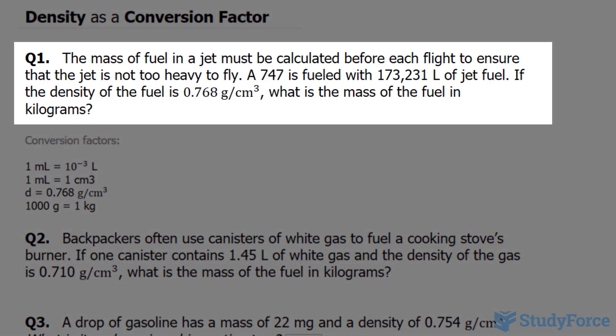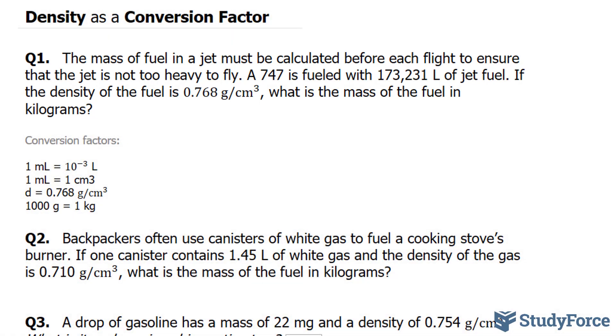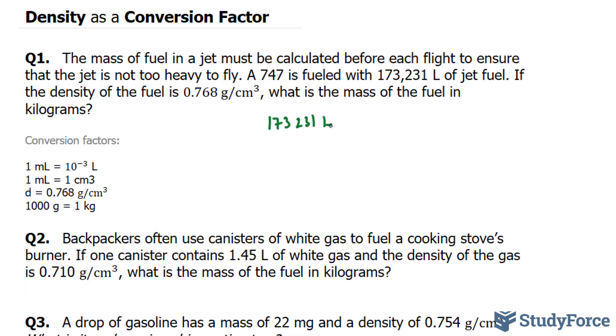In question one, we're asked: the mass of fuel in a jet must be calculated before each flight to ensure that the jet is not too heavy to fly. A 747 jet is fueled with 173,231 liters of jet fuel. If the density of the fuel is 0.768 grams per centimeters cubed, what is the mass of the fuel in kilograms? Let's start by writing out what we know. We know that the jet requires 173,231 liters, and this is a measured number, so this has six significant figures.